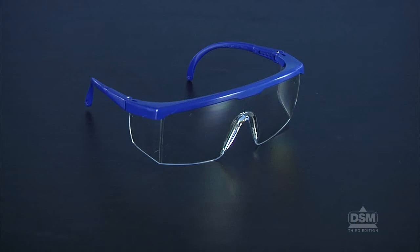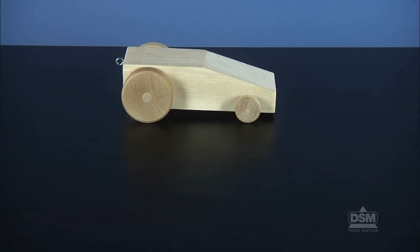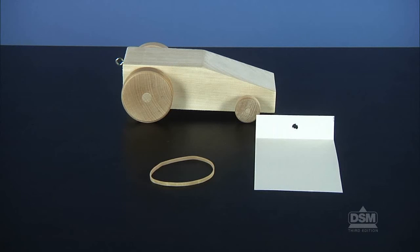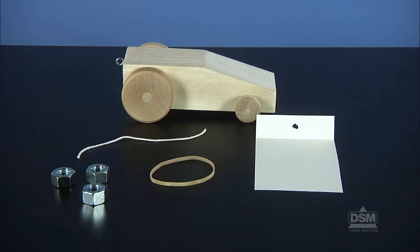For this activity, each student will need one pair of safety goggles. In addition, each team of four will need a tractor from Activity Five, a long rubber band, a sled made from an index card, three hex nuts, a piece of string, and a piece of tape 13 centimeters long.